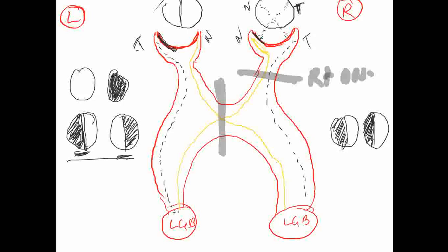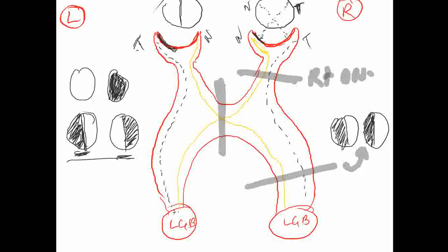Now the third defect. Remember, beyond the optic chiasma everything is contralateral. I have cut the right optic tract. The left-sided nasal fibers and left-sided temporal fibers are affected. This will result in contralateral homonymous hemianopia.